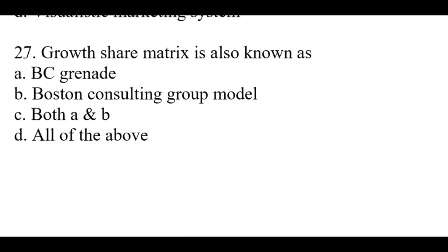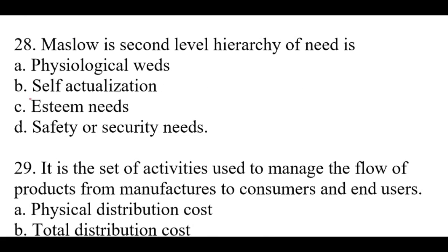Question number twenty-seven: Growth share matrix is also known as — right option is C, both A and B: BCG matrix and Boston Consulting Group model. Question number twenty-eight: Maslow's second level hierarchy of need — right option is D: Safety or security needs.